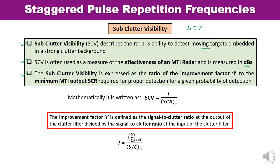The improvement factor I is the ratio of signal-to-clutter ratio at the output of the clutter filter divided by the signal-to-clutter ratio at the input of the clutter filter. For example, if an MTI radar has an SCV of 20 dB, it means a moving target can be detected in the presence of clutter even though the clutter power is 100 times the target echo power.